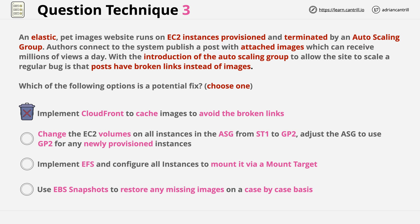The second answer suggests changing the volumes attached to the EC2 instances from one type to another. On the surface this might seem illogical — why would changing the volume type help? If you view the question through the lens of something being wrong with the image storage, then moving to certain EBS volume types like IO1, which can be attached to more than one instance at a time, might in some way influence the solution. But in this case, moving from ST1 to GP2 simply changes performance characteristics — it doesn't impact features and so it can't help with this scenario.